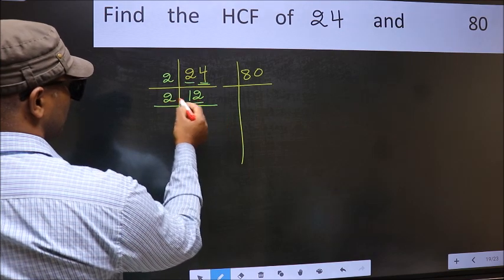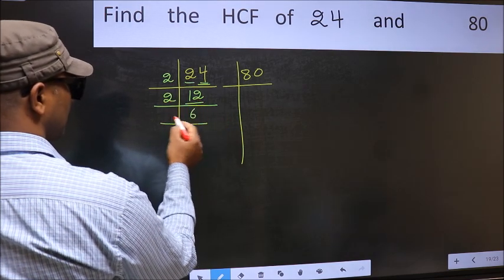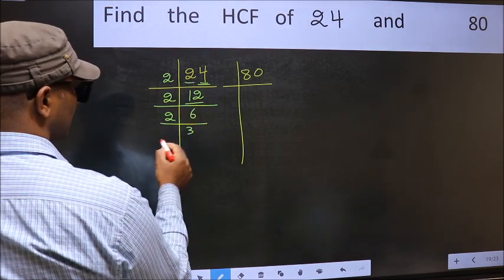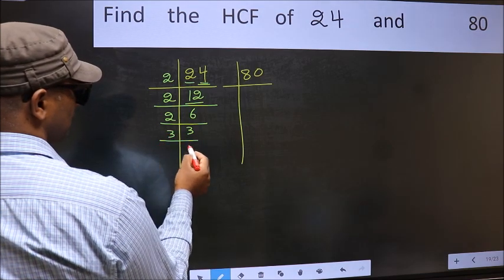Now 12 is 2 times 6 is 12. 6 is 2 times 3 is 6. Now 3 is a prime number, so 3 times 1 is 3.